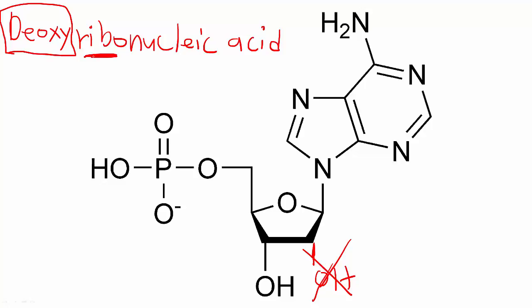Next, we have ribo. Well, I already went over this already, and you probably already know that ribo is just referring to this ribose right here. And nucleic, well, what is this thing called? It's called a nucleotide. That kind of gives it away. Also though, where is DNA found? In the nucleus. Makes sense.